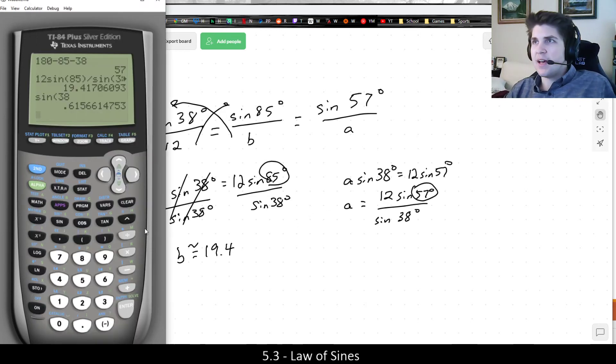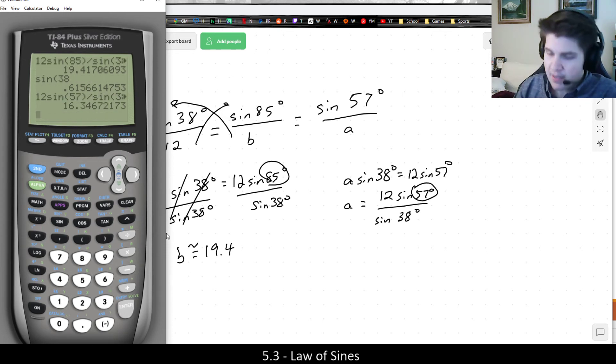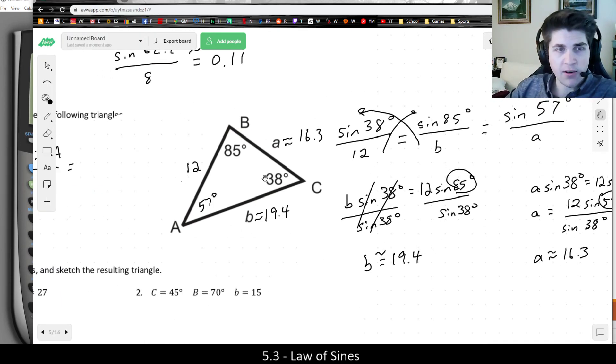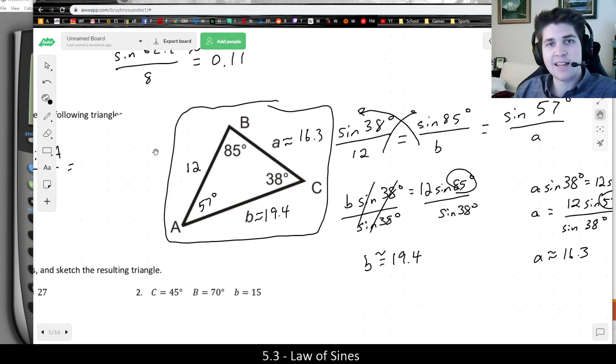But anyways, let's go ahead and do that. So I'm just going to take the same prior formula and change 85 to 57. And that would give me side A, which is approximately 16.3. And after all is said and done, I can completely solve the triangle, which again means finding all the sides and finding all the angles. So typically you need to use the law of sines twice because you're not allowed to use the Pythagorean theorem here.